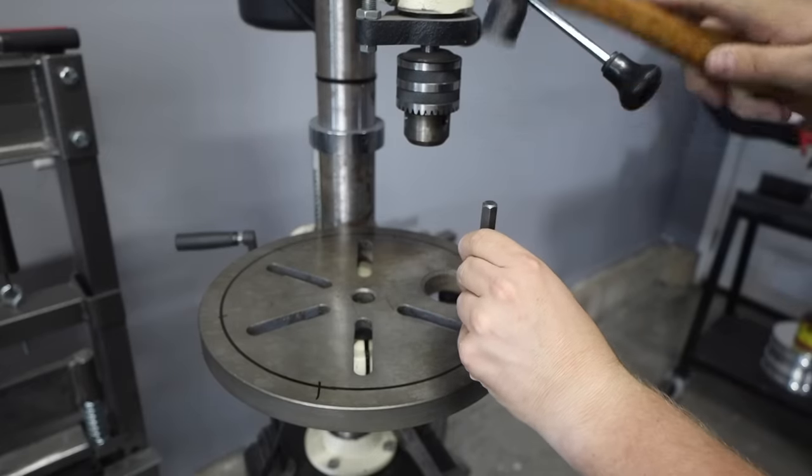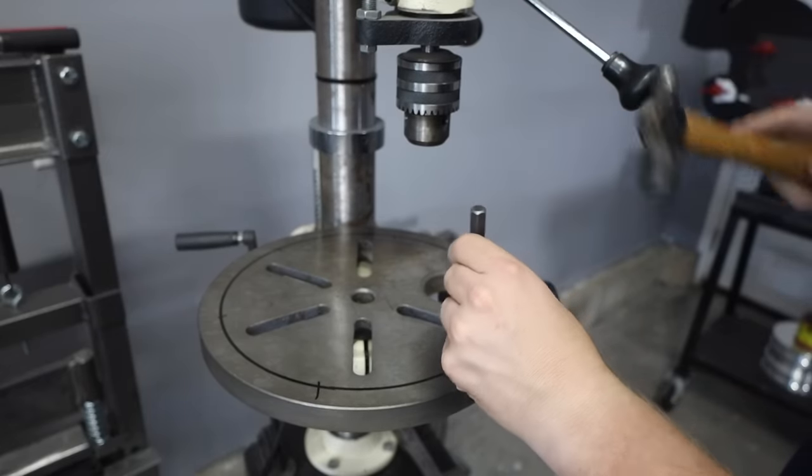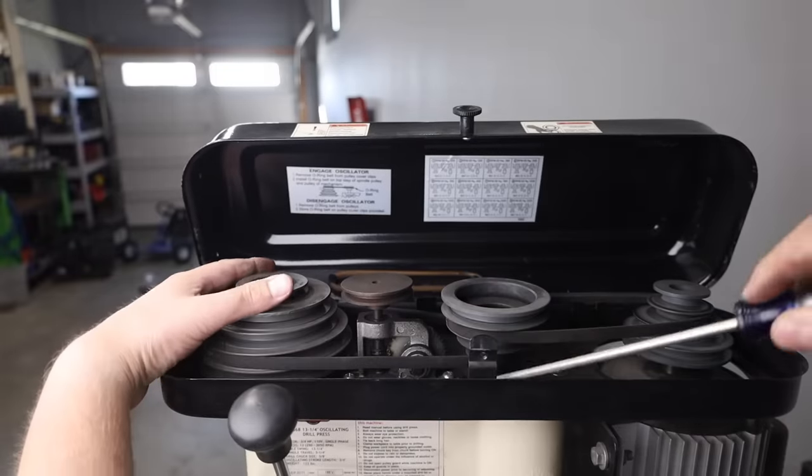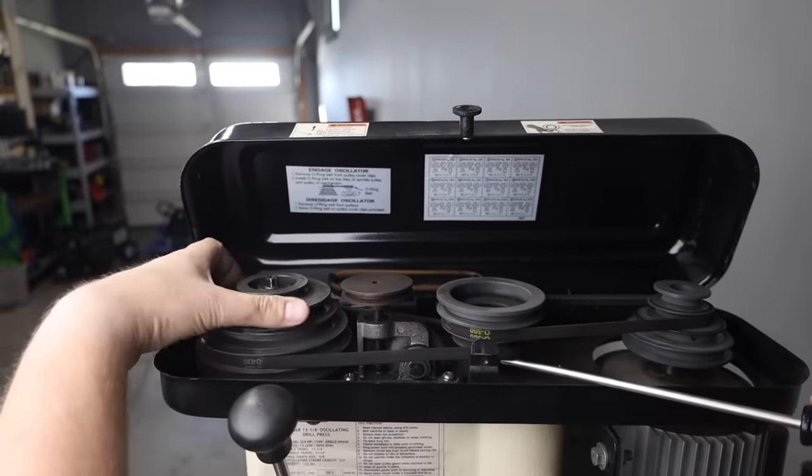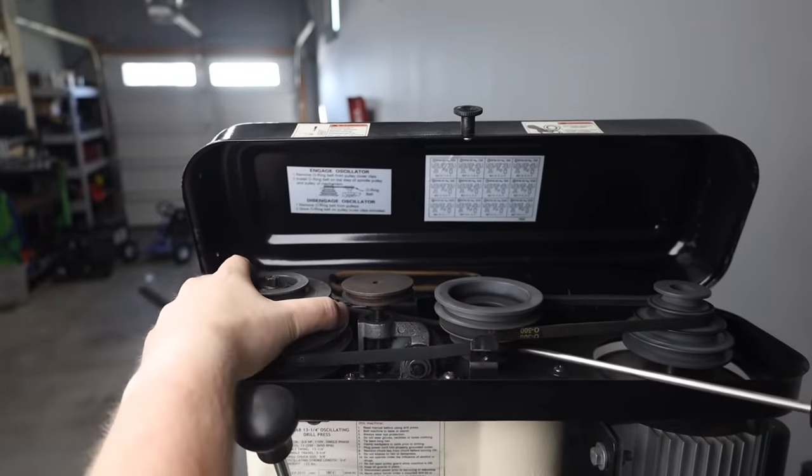I'm only going to center punch the first hole until I know that this is actually going to work. I'll set my drill press to 500 RPM, which I think should work pretty well with the 5/8 bit on cast iron.